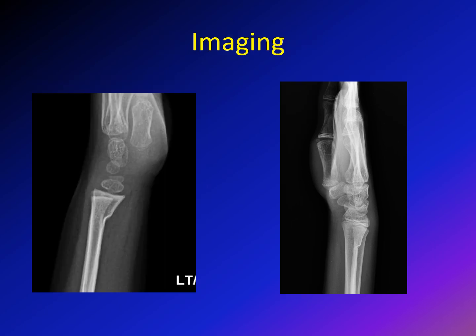Let me review the two examples we've seen for distal radius torus fracture, which is the most common. In the first example, the volar cortex — identifiable because the thumb is always volar — shows the fracture: the buckling and compression failure happened into the volar cortex while the dorsal cortex is intact. In the second example, the failure happens in the dorsal cortex while the volar cortex is intact. So as you can see between these two examples, the torus fracture can affect either the volar or dorsal cortex, and the other one will be intact — this is the definition of torus fracture.